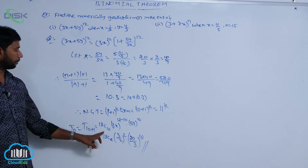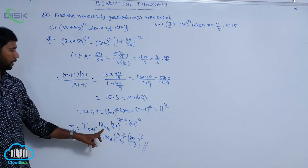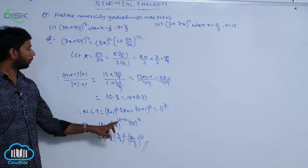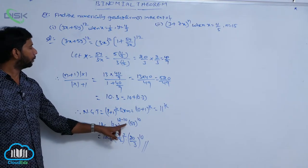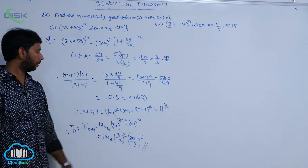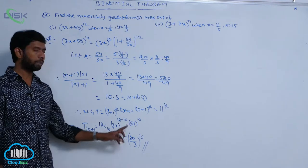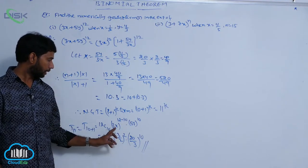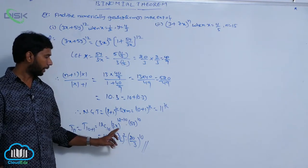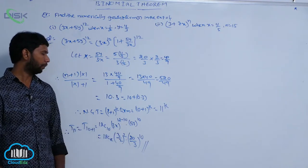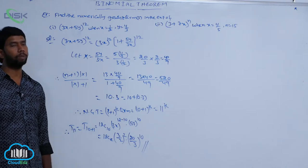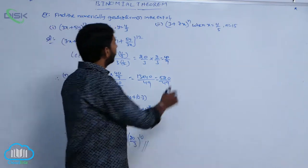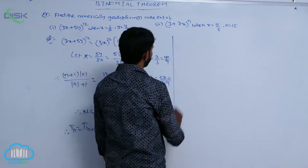T(R+1) = 12C10 × (3x)^(12−10) × (5y)^10, where R = 10. Here x = 1/2 and y = 4/3. Substitute the values. Next, we go to the second example.